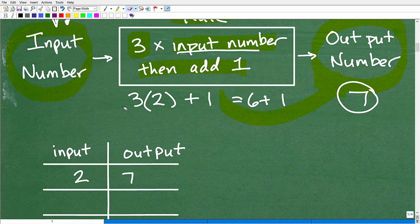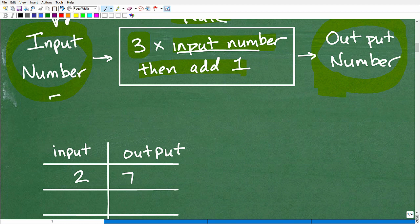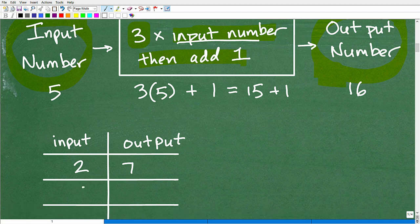Okay. So let's have you try a problem. Let me erase this. And let's say our input number now is five. So what do you think the output number is going to be? All right. So if you want to pause the video, I'm going to give that a try. Let's go ahead and figure it out now. Okay. So it's three times the input number. So that's going to be three times five. And then I'm going to add one. Okay. So it looks like that's three times five. That's 15 plus one. So that will be 16.